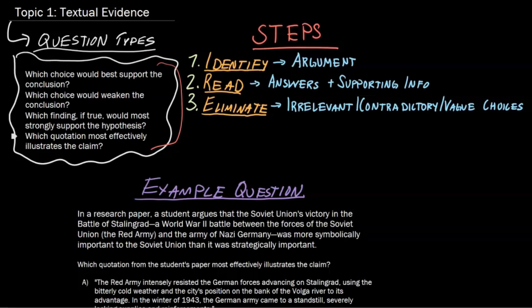We've got a pretty simple three-step plan here. The first step is you've got to identify their argument. This whole question is going to center on what the conclusion is, what the hypothesis is, what the claim is. If you can't identify that, you're not going to know how to answer the question — this is the most important step. Then you're going to read the answers and the supporting information; in other words, every part of the paragraph, every part of your passage that's not the argument.